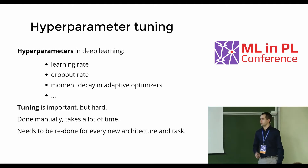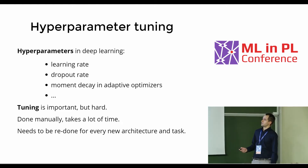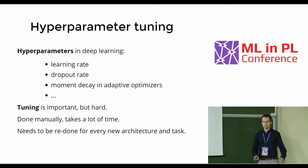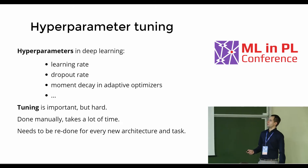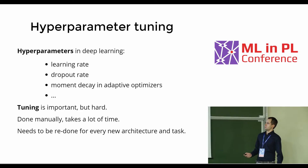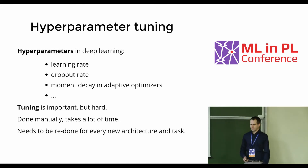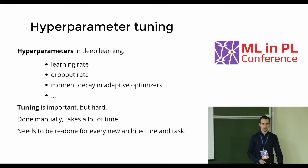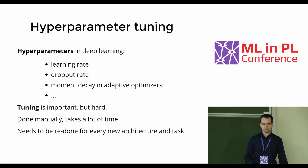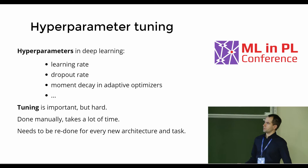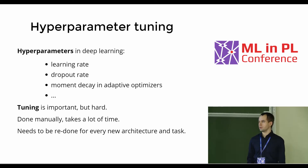We have obvious things like the learning rate, various parameters of regularization methods like the dropout rate, and in adaptive optimizers we have things like moment decays. And in other paradigms like unsupervised learning and reinforcement learning we have all sorts of other hyperparameters. Those hyperparameters are very important — you need to tune them really well in order for your architecture to achieve optimal performance.